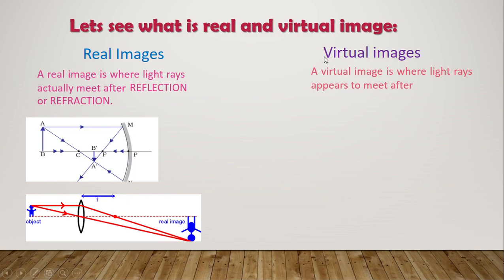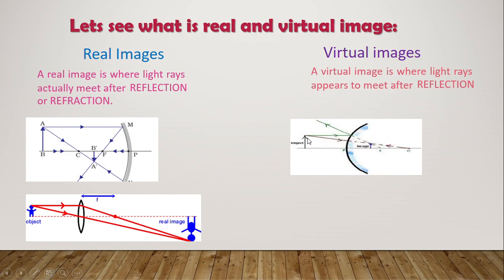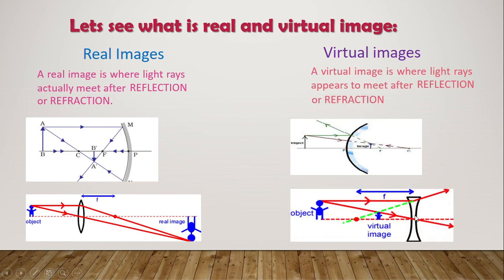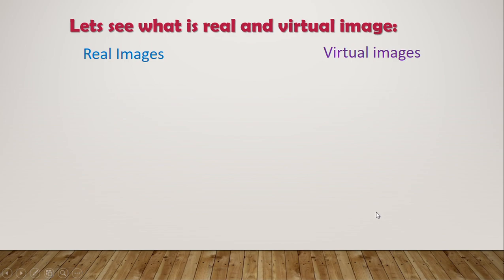A virtual image is where light rays appear to meet after reflection or refraction. The incident rays are reflecting but they're not actually meeting — you can see the dotted lines going and meeting at a point, showing the image. Those are not real reflected rays but virtual rays appearing to meet. Similarly with refraction through a concave lens, the rays diverge and appear to meet along dotted lines, forming a virtual image.